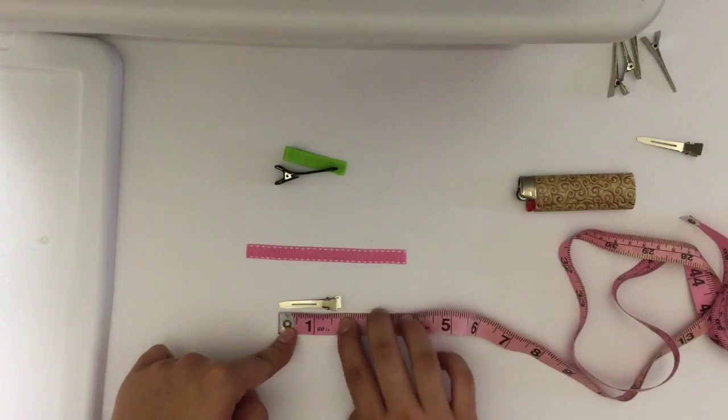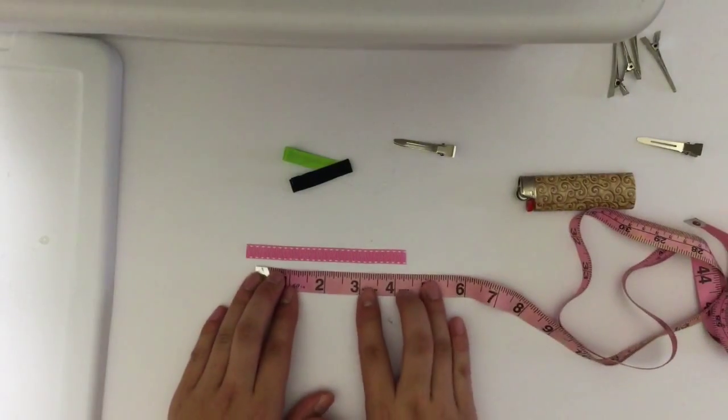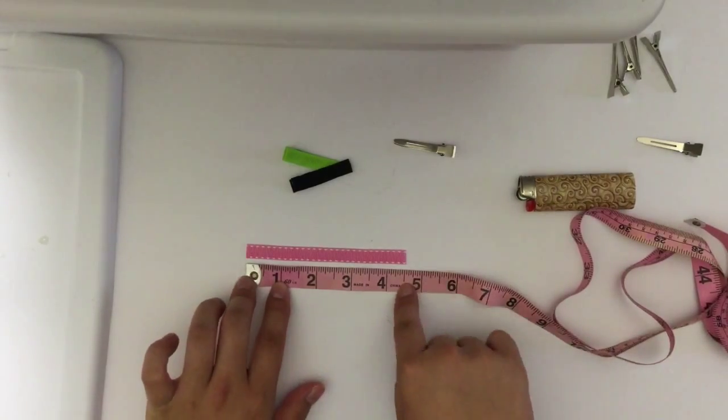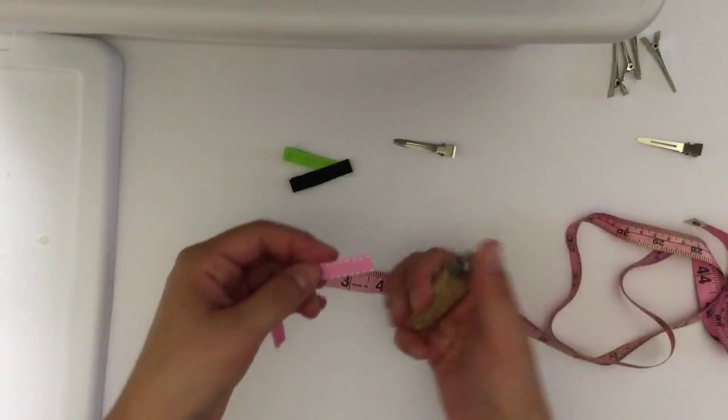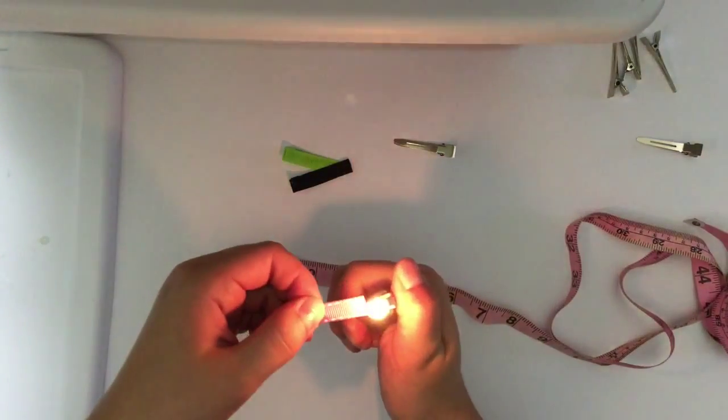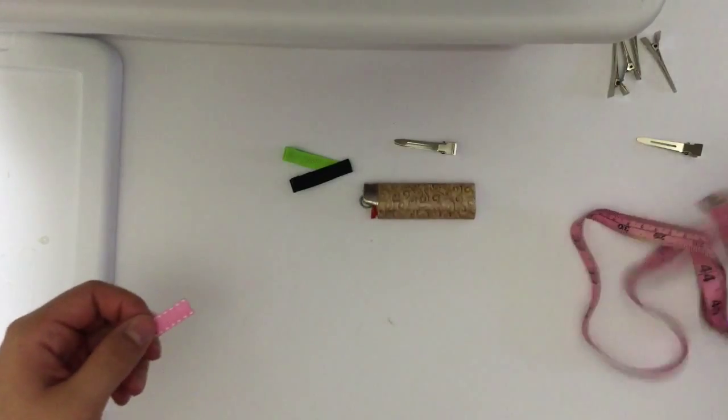These measure at one and three quarters of an inch long, and to cover that you will need four and a half inches of your grosgrain ribbon. That measurement is exact, so you'll want to cut and heat seal both ends of your ribbon before you cover your clip.